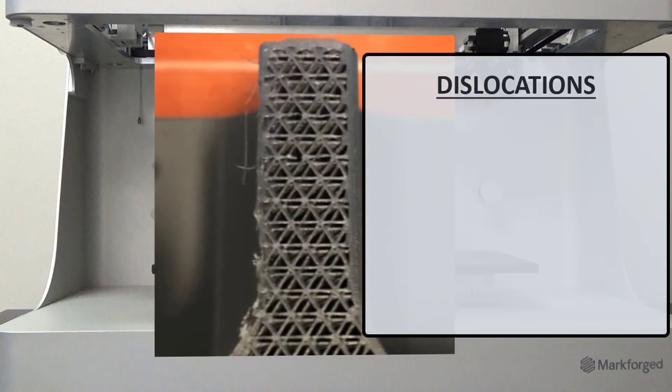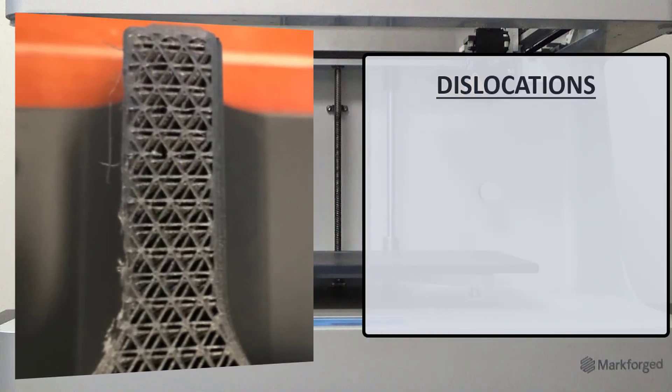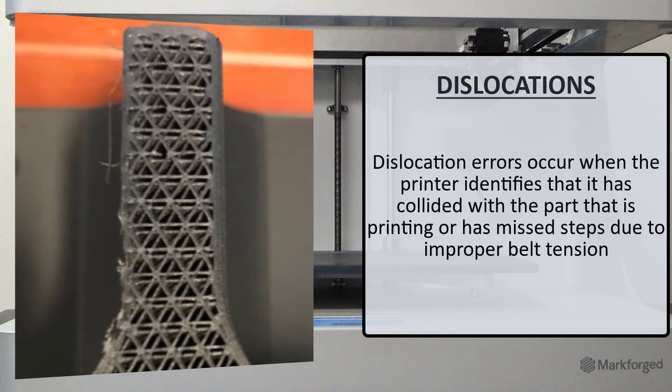What should we do if we experience dislocations? Dislocation errors occur when the printer identifies that it has collided with the part that is printing, or has missteps due to improper belt tension. While printing, the printer will stop every 5 layers to run a check to determine if a dislocation has occurred. If the printer believes a dislocation has occurred, it will stop the print with an error notification.